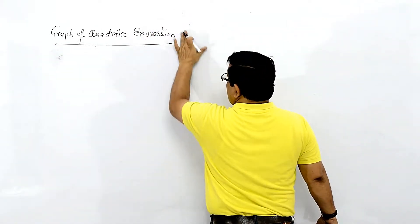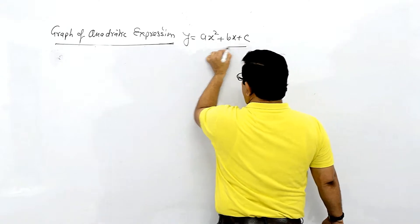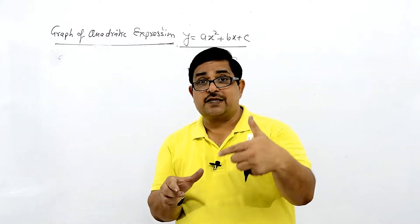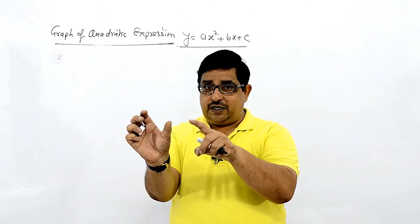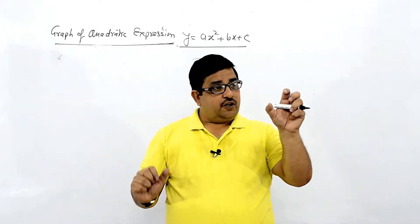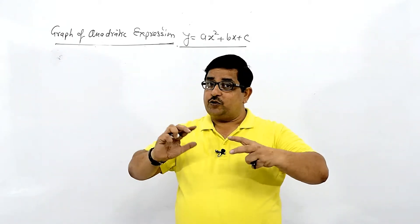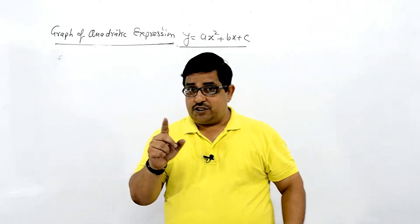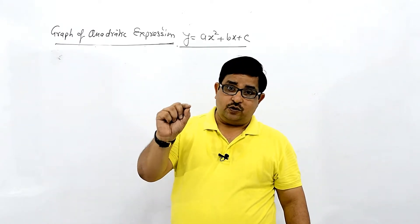We have to draw the y = ax² + bx + c graph. We have the y = x² graph, y = -x² graph, then we have a little shift, y is positive — that's the third example. To understand this step by step, we have to make two things clear: one is what is the vertex, and what is the shifting.